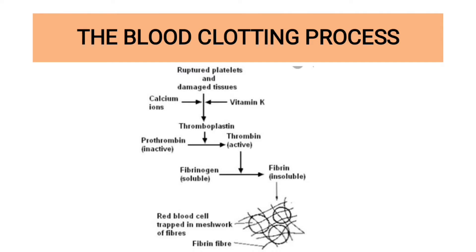The blood clotting process starts when a blood vessel — that is the artery, vein, venule, capillary, or arteriole — has been damaged. This causes the platelets, those are the types of cells found in the blood, to be exposed to the air, causing them to rupture and produce a protein called thromboplastin. Thromboplastin is also called thrombokinase enzyme.